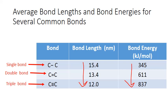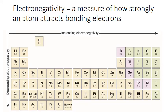This is the opposite of the convention we just saw for lattice energy of ionic compounds. Just remember that covalent bond energies also represent the amount of energy released when the bond is formed — the higher the bond energy, the more energy released. It turns out that atoms of different elements attract bonding electrons to themselves to differing degrees. Electronegativity is a measure of how strongly an atom will attract bonding electrons.